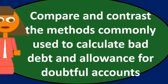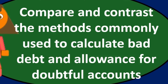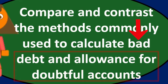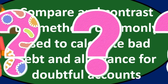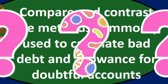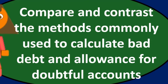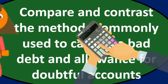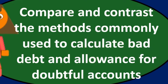In this discussion, we will address the question of comparing and contrasting the methods commonly used to calculate bad debt expense and the allowance for doubtful accounts. The first question we need to ask is: what are these things, what do they relate to, and what problem are we trying to solve?